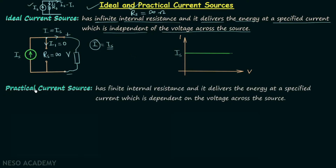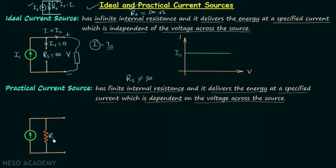Now we move to the practical current source. A practical current source has finite internal resistance, meaning RS is not equal to infinity, and it delivers energy at a specified current which is dependent on the voltage across the source. Consider a finite source resistance RS with one element connected across the terminals. IS is the source current, which divides at the node: I1 flows through RS and I flows through the element.